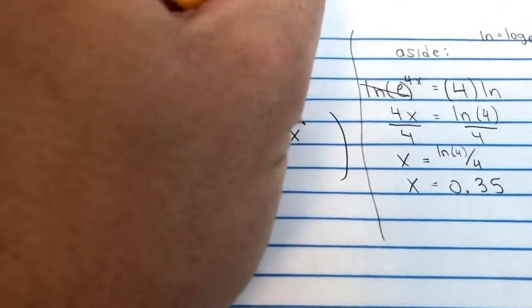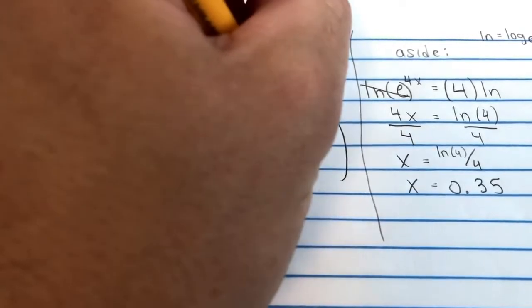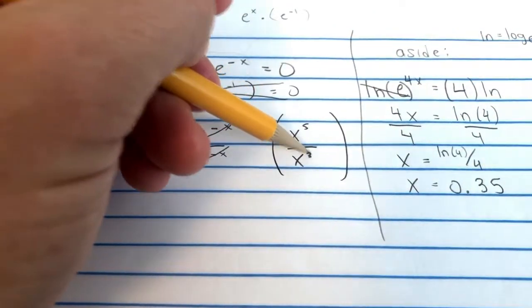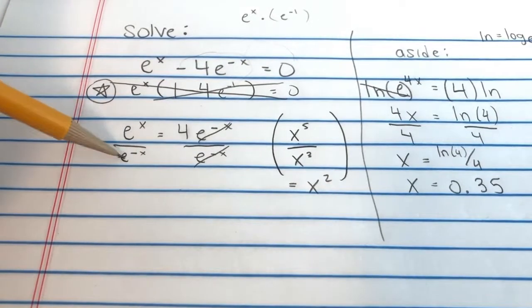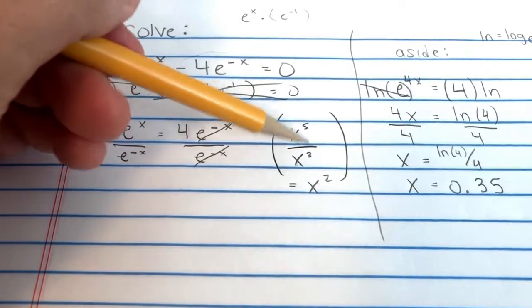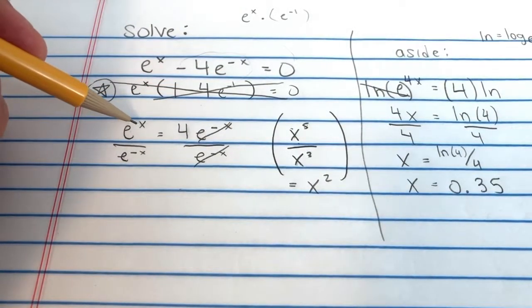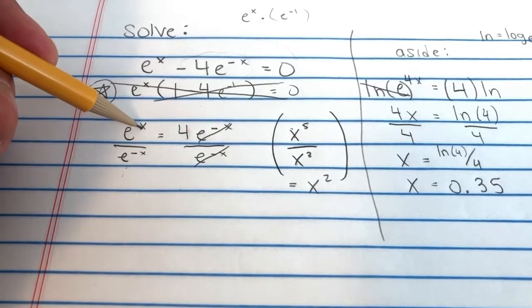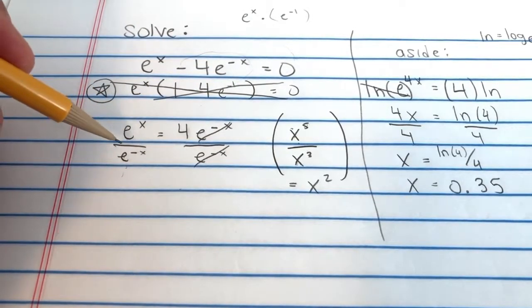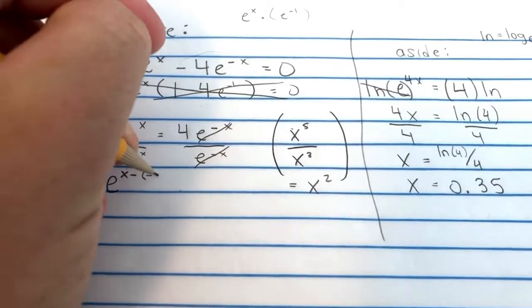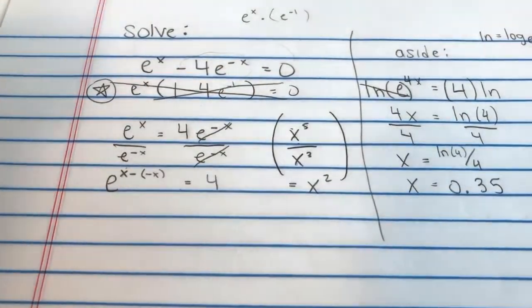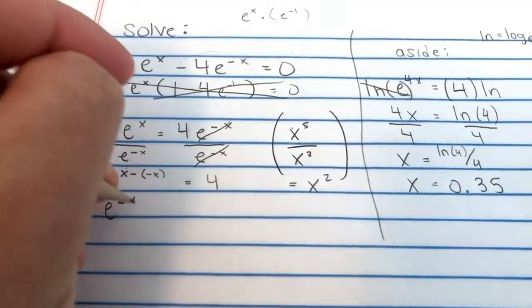And, this requires our good old exponent rules. Let's do a little aside here. What's like x to the 5th over x to the 3rd? That would be 5 minus 3. So, that would be x squared. So, when there's two things with the same base, like E or x here, the exponents get subtracted. So, 5 minus 3. Well, these have the same base. So, it'd be x minus a minus x. So, that's like E to the x minus a minus x equals 4 on this side. Well, x minus a minus x is x plus x. So, 2x. So, E to the 2x equals 4.